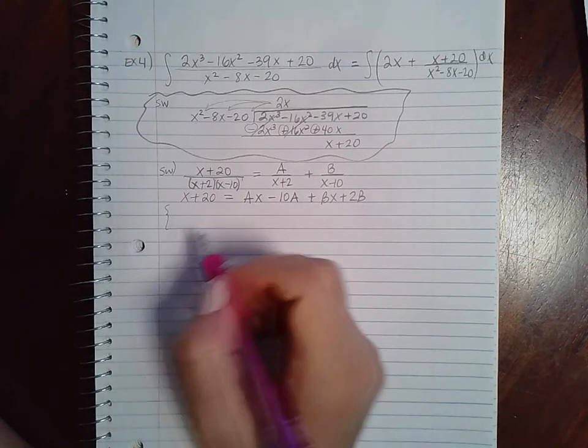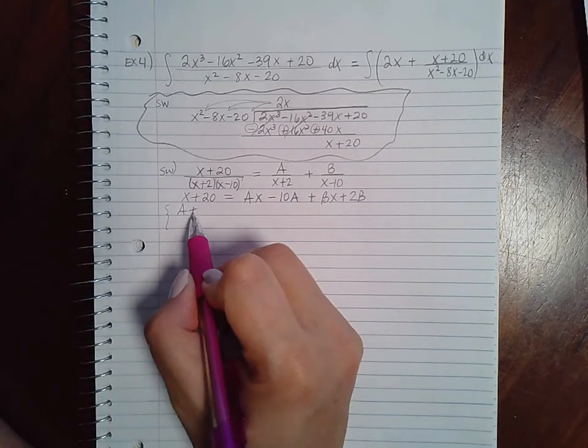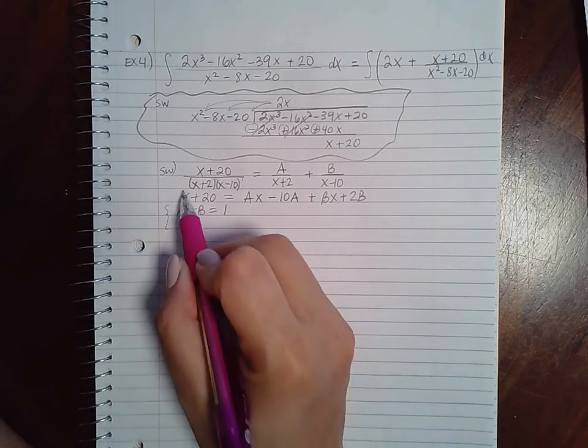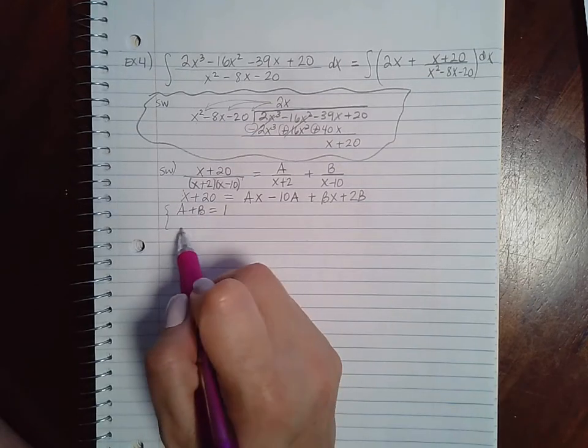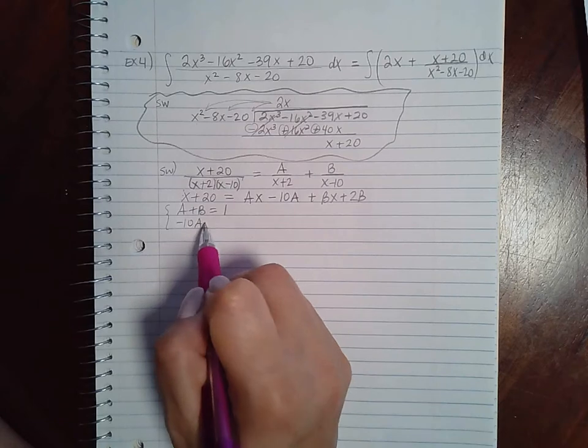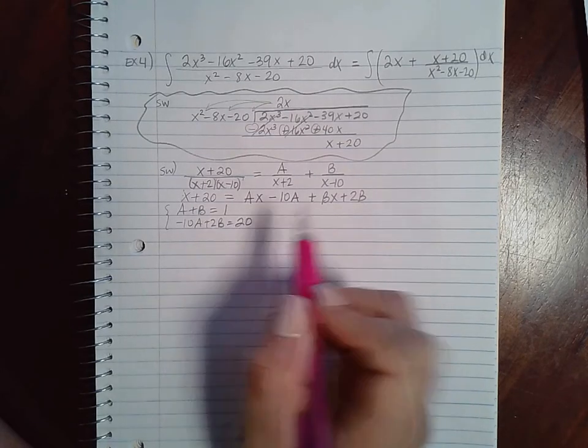And if I set up my systems of equations, I get a plus b will have to equal 1, this guy's coefficient. And negative 10a plus 2b will have to equal the constant 20.